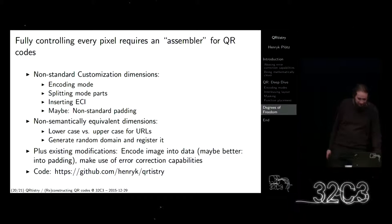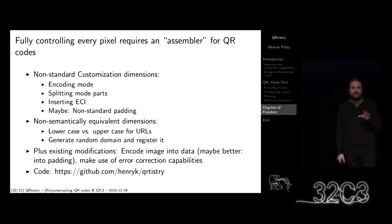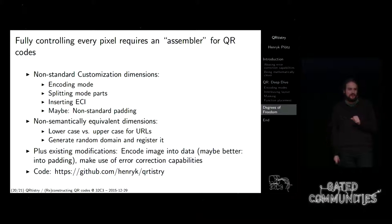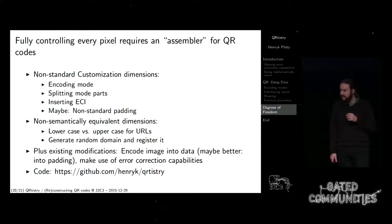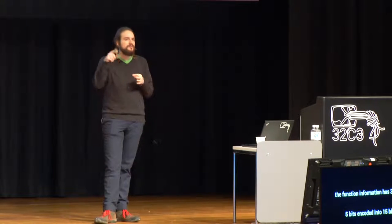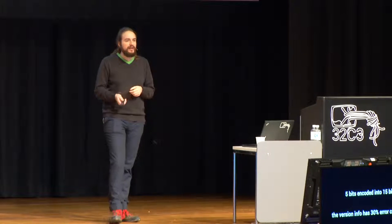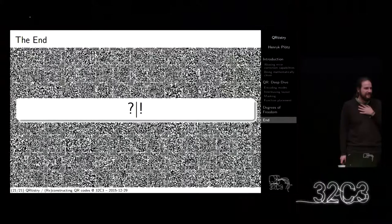Man kann all diese Techniken kombinieren, auch die von Russ Cox. Wenn man dann dem gewünschten Code sehr nahe kommt, kann man den Rest einfach übermalen — der Rest hat dann Fehlerkorrektur. Man kann das Niveau der Fehlerkorrektur wählen. Die Funktionsinformationen hat etwa 30% — 5 Bits werden in 15 Bits kodiert, 6 Bits werden in 18 Bits kodiert. Man kann im Prinzip alles ändern, solange man nicht zu viel ändert. Den Code kann man hier auf GitHub finden, der Code ist noch nicht so nützlich. Versucht es mal zu scannen.